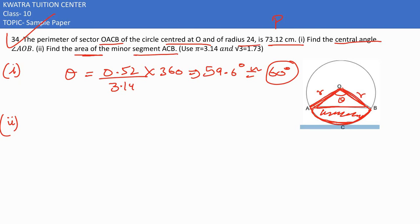For area of sector, we use theta over 360 into pi R squared. Theta is 60, so 60 over 360 into 3.14 into 24 squared.